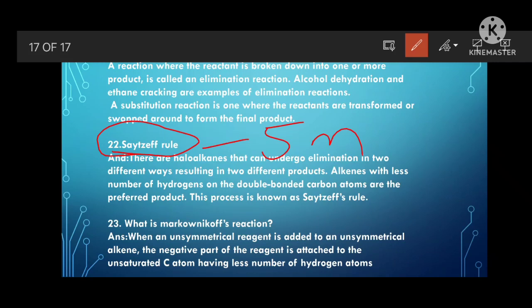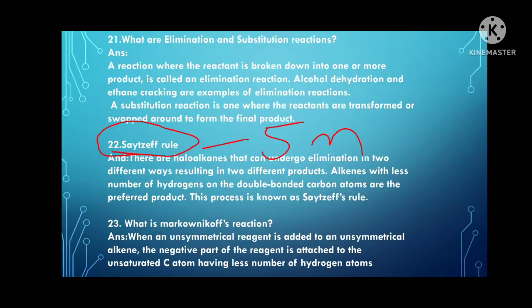What is Markovnikov's rule? When an unsymmetrical reagent is added to an unsymmetrical alkene, the negative part of the reagent attaches to the unsaturated carbon atom with the greater number of hydrogen atoms. Anti-Markovnikov rule is the opposite: the negative part attaches to the carbon with the lesser number of hydrogen atoms.